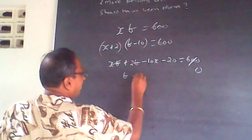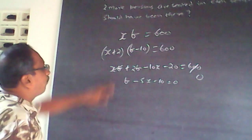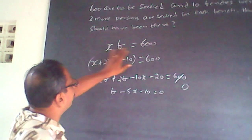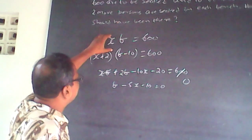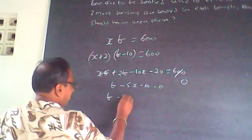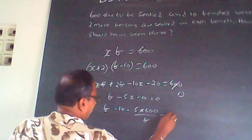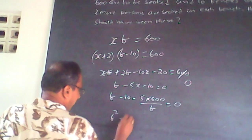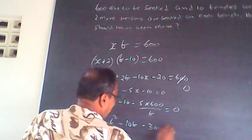Since b equals 600 divided by x, we get x equals 600 divided by b. Substituting x in terms of b: b minus 10 minus 5 times (600 divided by b) equals 0. Solving this gives b squared minus 10b minus 3000 equals 0.